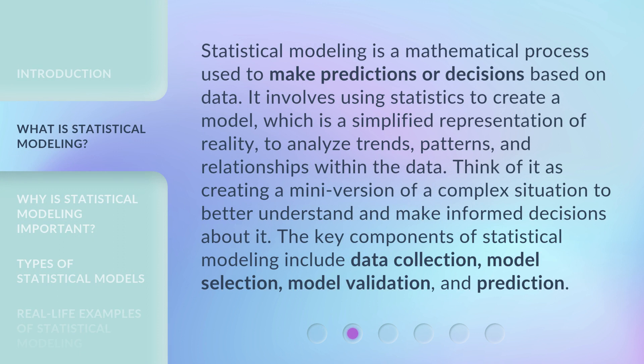Statistical modeling is a mathematical process used to make predictions or decisions based on data. It involves using statistics to create a model, which is a simplified representation of reality, to analyze trends, patterns, and relationships within the data. Think of it as creating a mini version of a complex situation to better understand and make informed decisions about it. The key components of statistical modeling include data collection, model selection, model validation, and prediction.